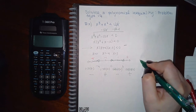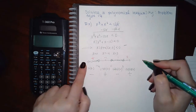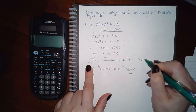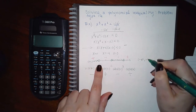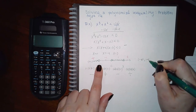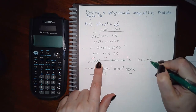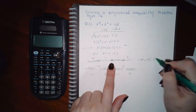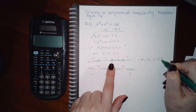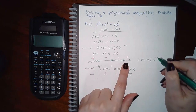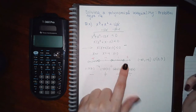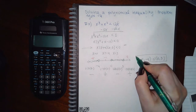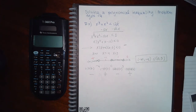Starting from left to right, I will have negative infinity to negative 4 — open dot means parentheses — union, then from 0 to 3 — open dots mean parentheses. And this is the answer in interval notation.